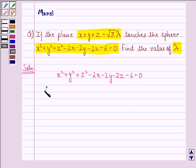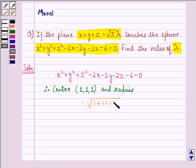Therefore the center is (1, 1, 1) and radius will be equal to √(1 + 1 + 1 + 6) = √9 = 3.